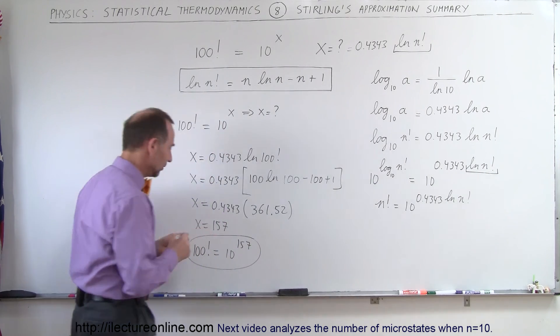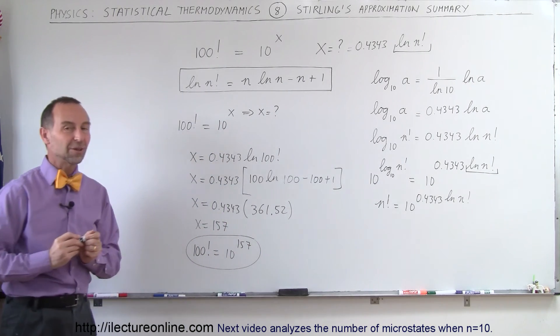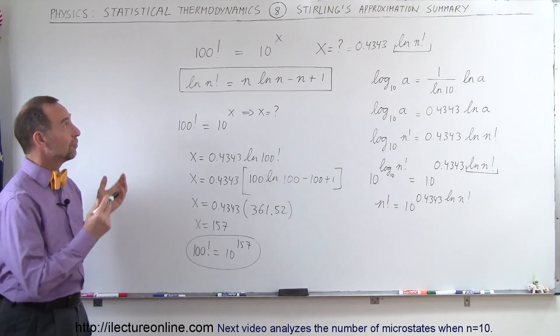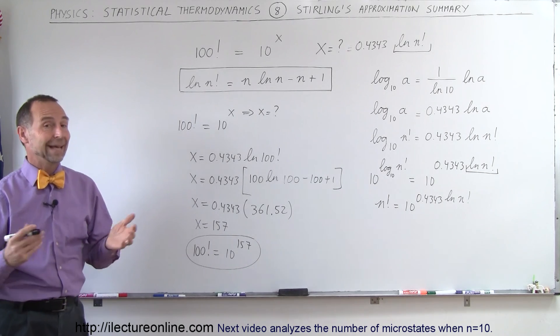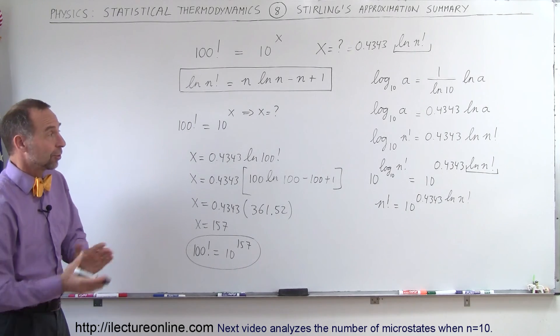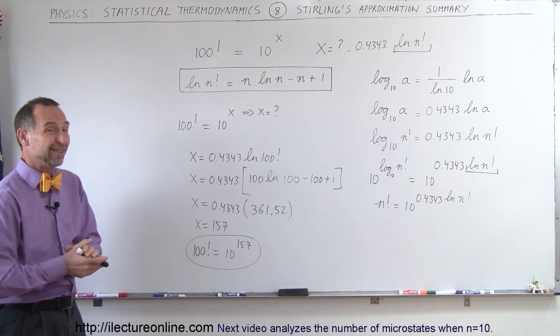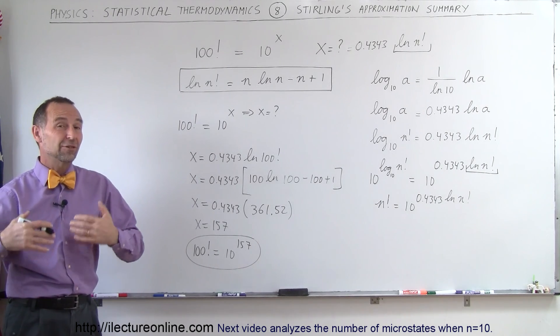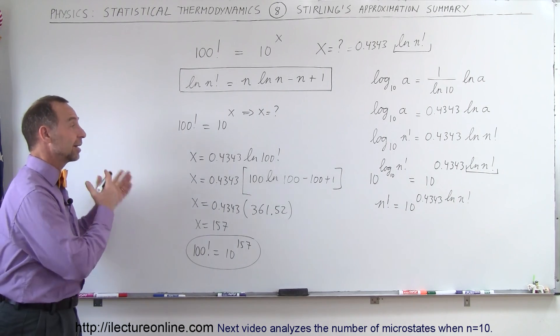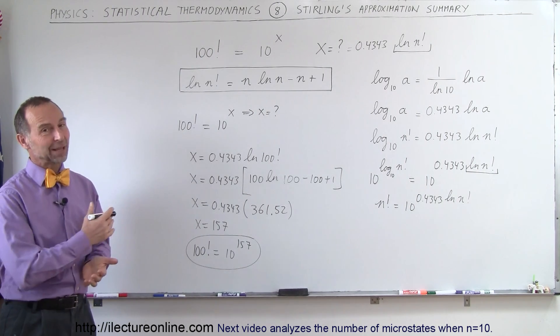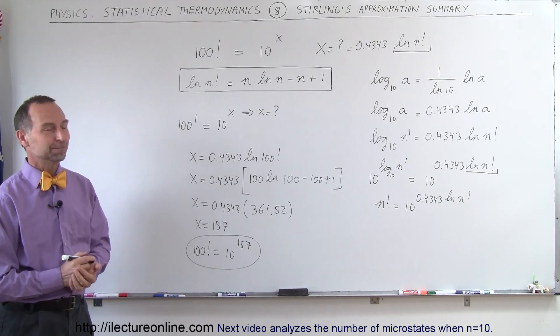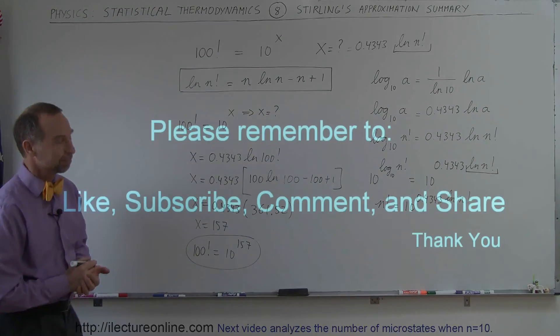There's a very simple way of using Stirling's approximation. In statistical thermodynamics, since we use a lot of large number factorials, it comes in really handy like this — and that's how we use it. Please take a look at the channel group page. Thank you.